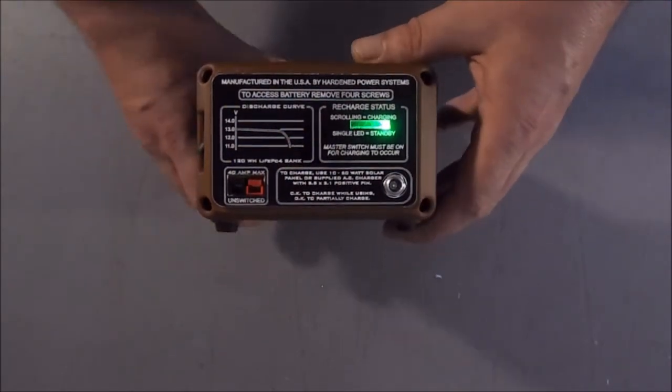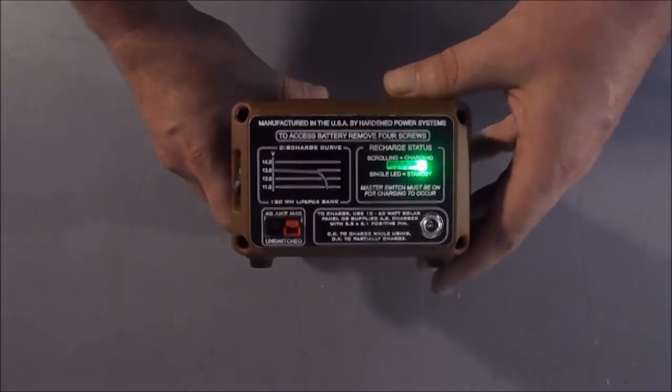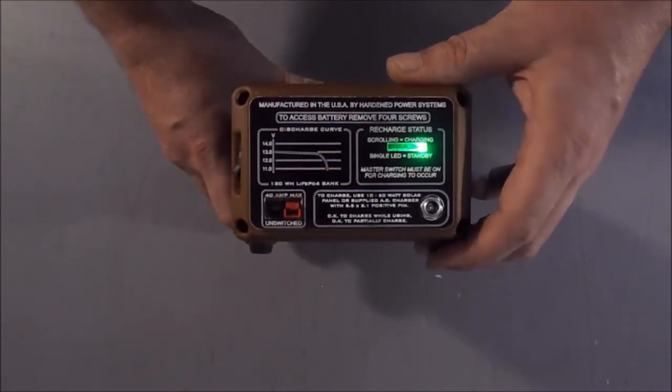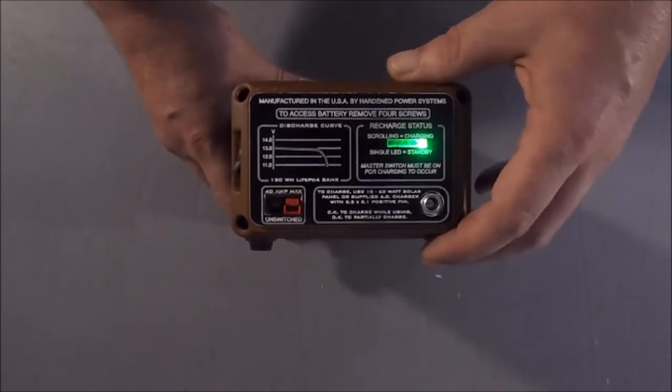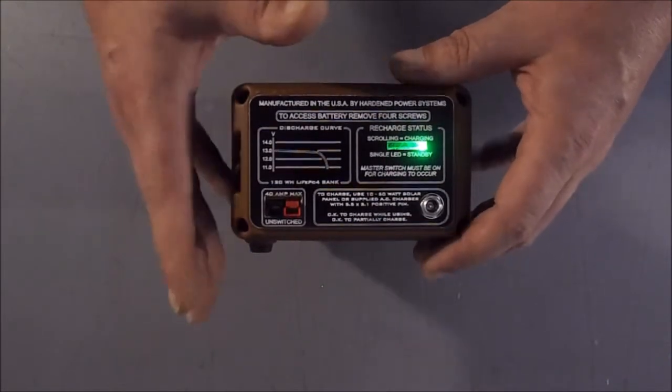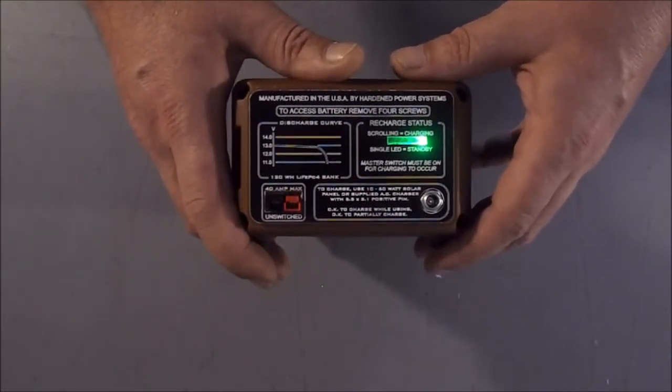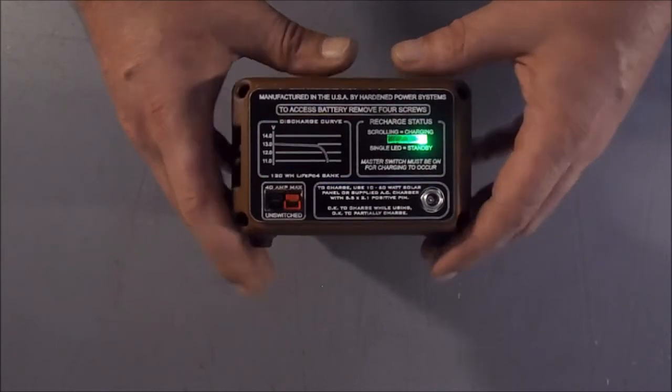The machine will handle up to 60 watts of solar. So you can plug in a fair amount of solar power including of course one of our 27 watt panels and charge this machine in the field. You can certainly charge it while you're using it.